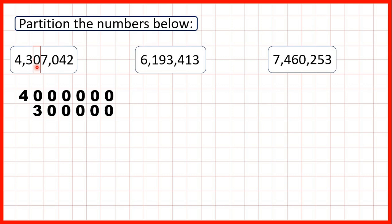The next digit is a zero and we don't partition zeros. That's because whatever place value it's in, zero always has the value of zero. Here zero is in our ten thousands place value, but zero times 10,000 is still zero, so we don't need to partition zero — we can move on to the next digit. We have a 7 in our thousands, so that's 7,000. We have three digits after the 7, so when we partition we write three zeros after the 7.